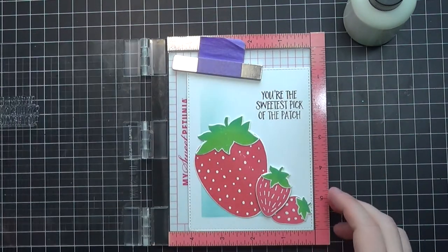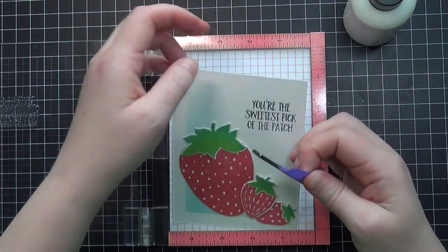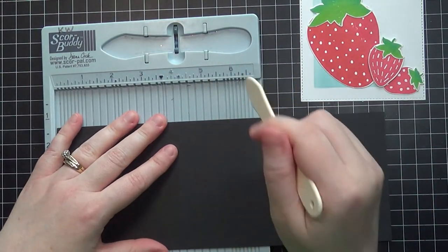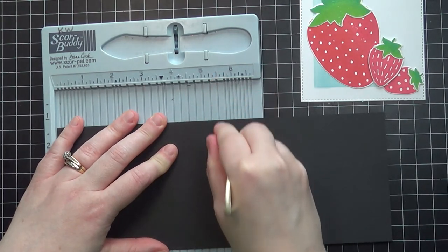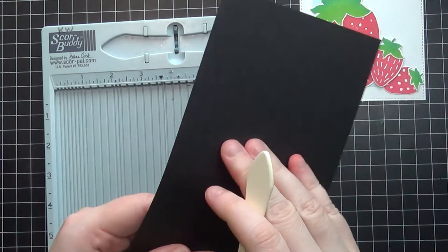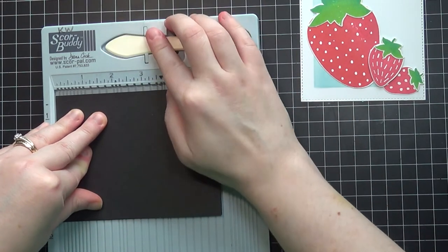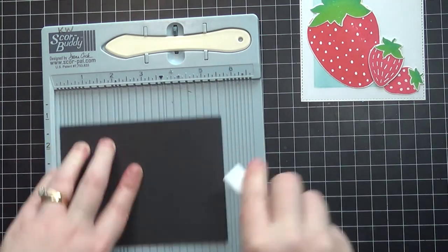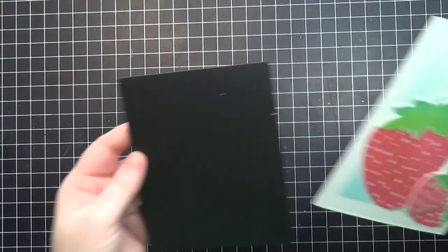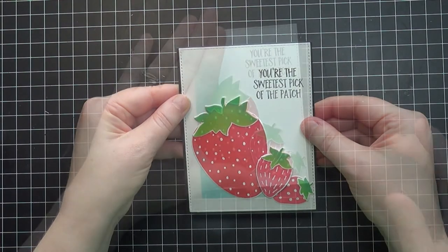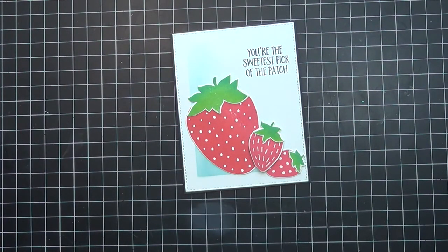Next I'm adding my whole panel to a black card base, a top fold card base. I'm going to score that at five and a half and get that good crease. I use the bone folder that comes with my Score Buddy, then my Teflon bone folder to really get that crease defined. I'm adding liquid adhesive on the back and adhering it to my card. Off camera I carefully added some shimmer with my shimmer pen to these strawberries.